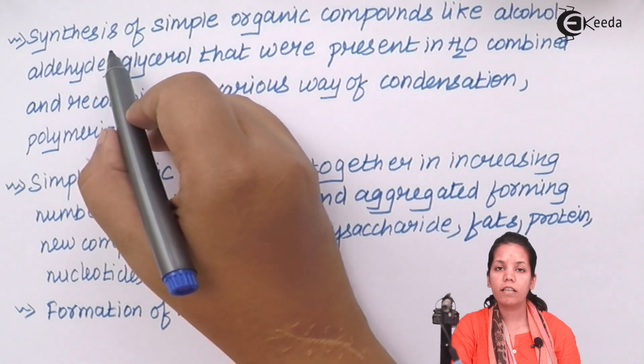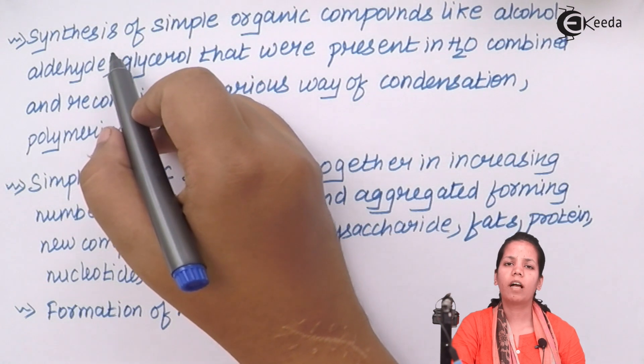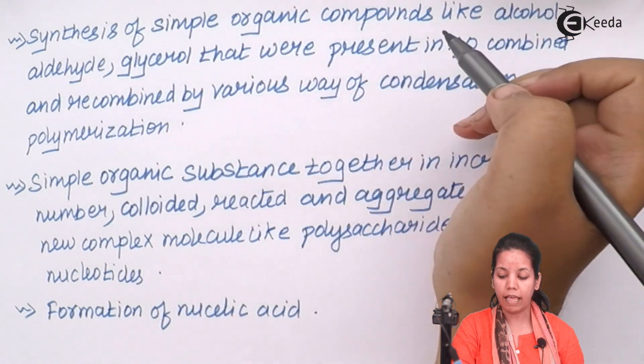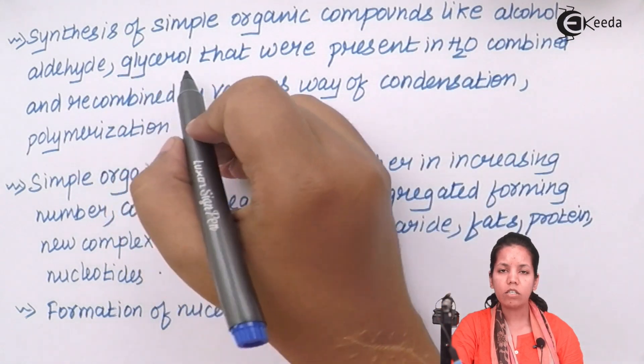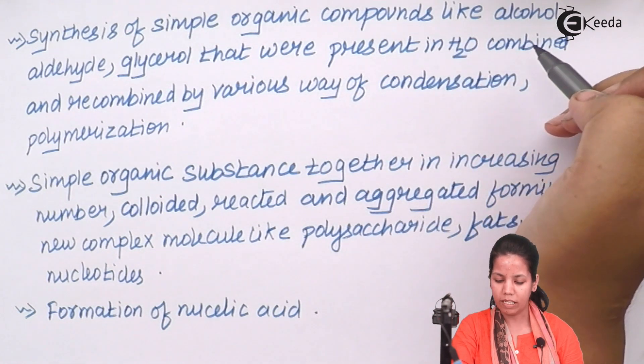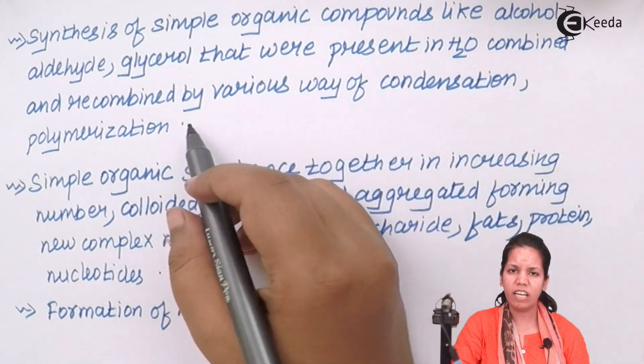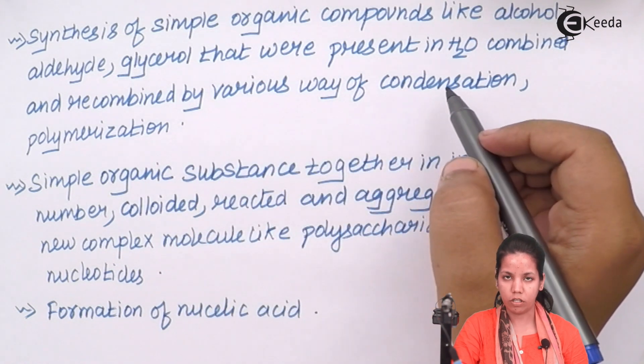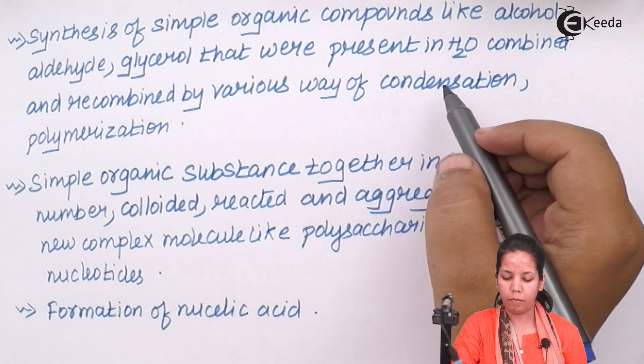What was observed is that after the formation of methane and ammonia, there was synthesis of simple organic compounds and these organic compounds were alcohol, aldehydes, glycerol that were present in water. And once they were present in water, they combined and recombined and this process was undergoing through reactions like condensation, polymerization finally to form the required compound.